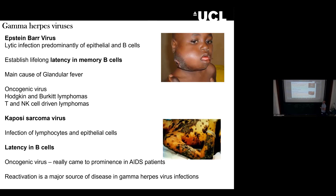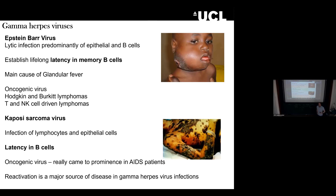With the gamma herpes viruses, lytic infection occurs in epithelial cells at mucosal membranes, and then latency is established in B cells. EBV is the main cause of glandular fever or infectious mononucleosis — very common in new students starting university, also known as the kissing disease. People who've had glandular fever feel run down, but it resolves itself eventually. But every now and again, a bout of stress depresses the immune system and the virus can reactivate, giving that tiredness associated with glandular fever.